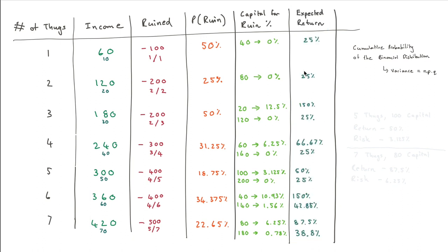And if we hold $120, we can reduce the ruin all the way down to 0%. But let's maybe actually look at expected returns while we do this as well, because what we can see, specifically for one and two thugs, our expected return is 25%. We're putting up $40, we're making 10 profit, so 10 divided by 40 is 25. Here, we're making $20, we're putting up 80. Once again, our expected return is 25%.